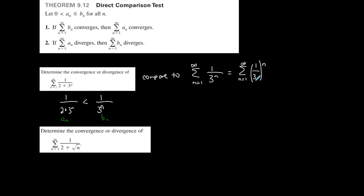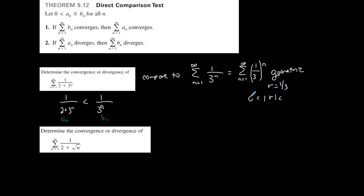The series 1 over 3^n can be rewritten as the summation from 1 to infinity of (1/3)^n. This is geometric in form — it's a geometric series where r, the common ratio, is 1/3. Since the absolute value of r is between 0 and 1, the series converges.